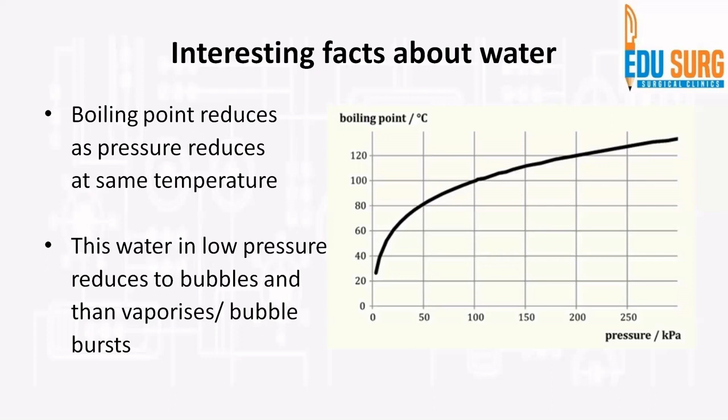When the pressure is zero, the boiling point is nearly only 20 degrees Celsius. So instead of 100 degrees Celsius, water will convert into vapor and steam at only 20 degrees Celsius. When the water is at low pressure and boils, it reduces to bubbles and then vaporizes, and those bubbles burst. This essentially is the concept of cavitation.